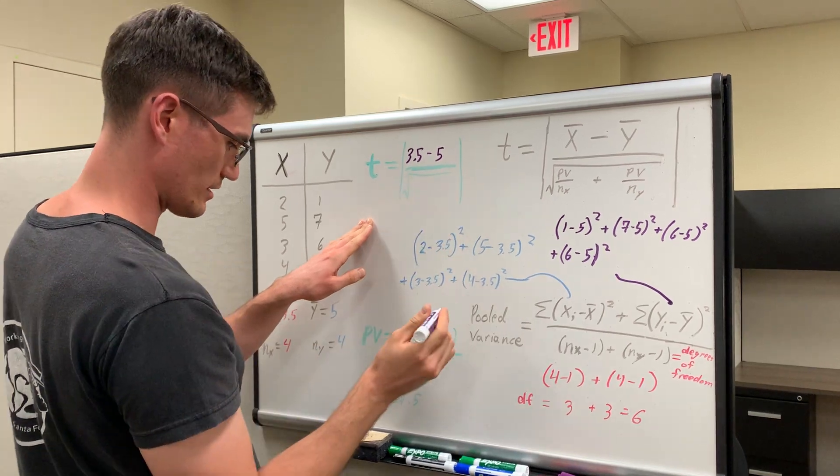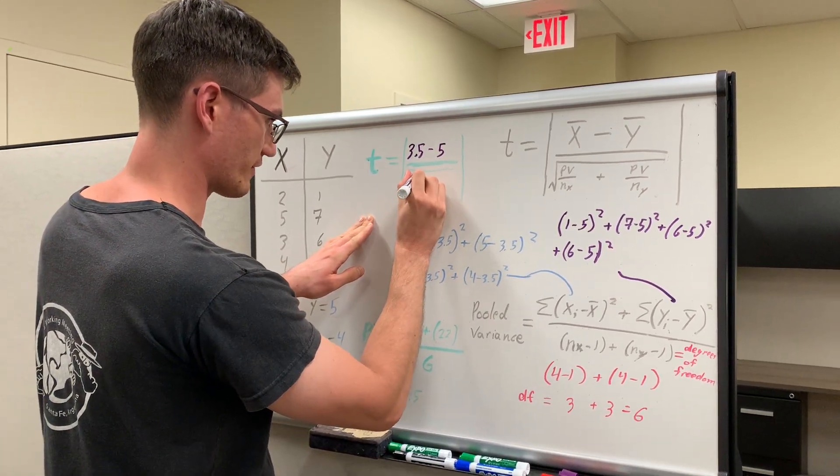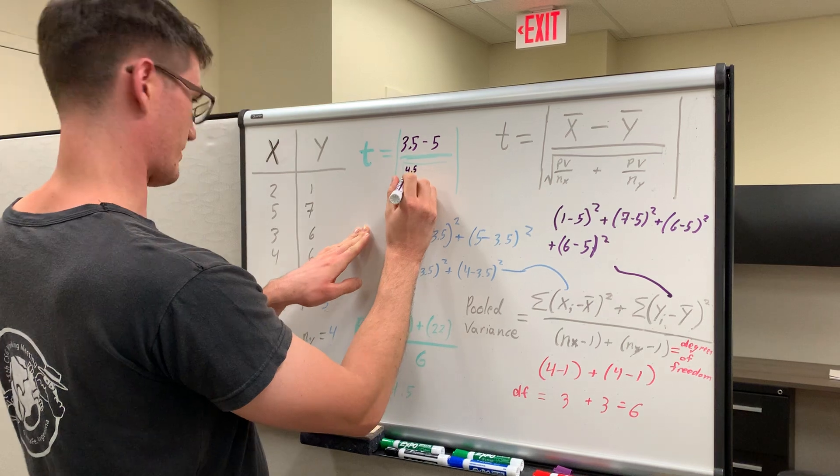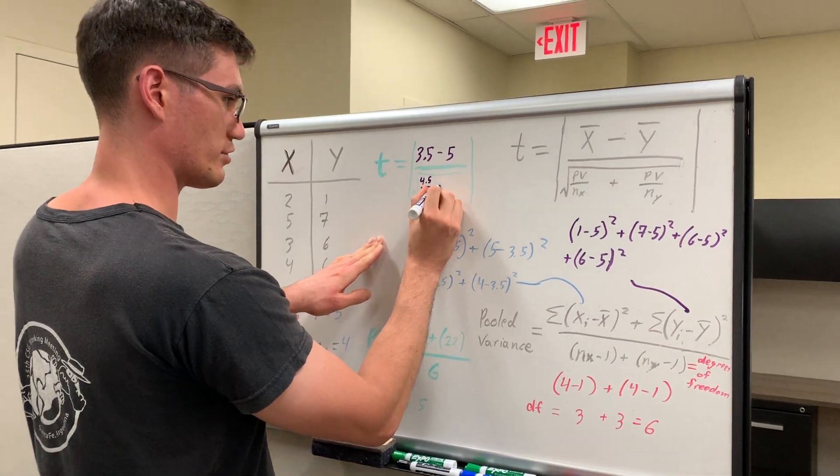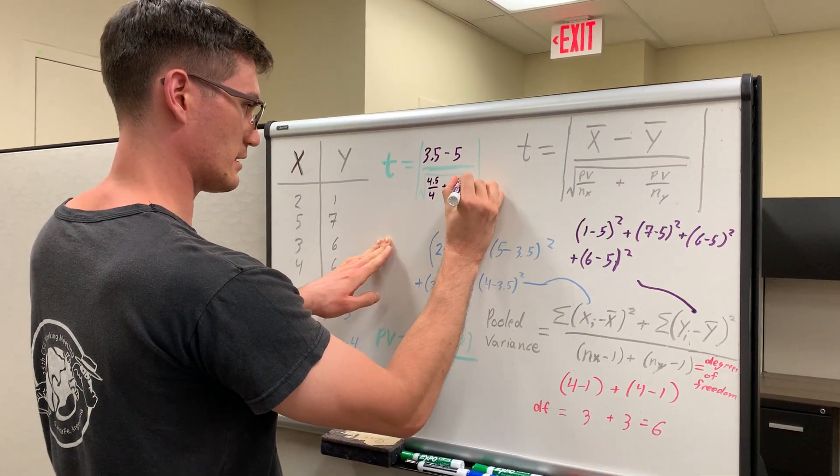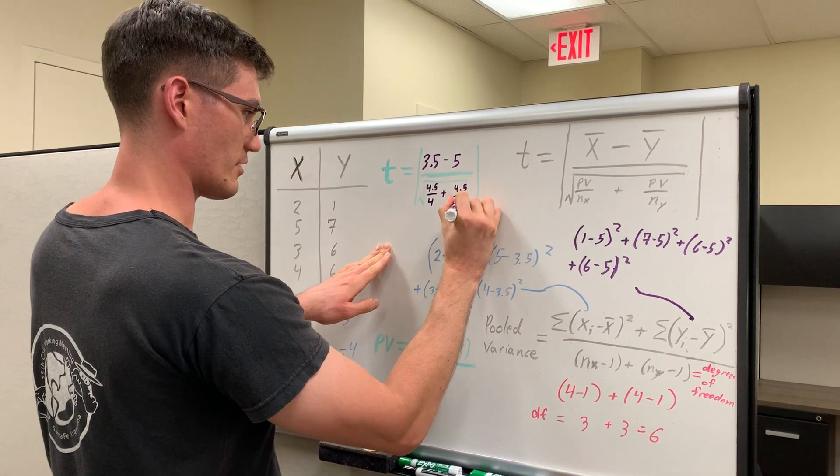And then go back down to our denominator. We have pooled variance equals 4.5 divided by n sub x, which of course is 4, plus pooled variance again, divided by n sub y, which is also 4.